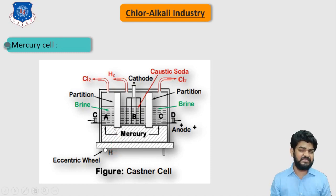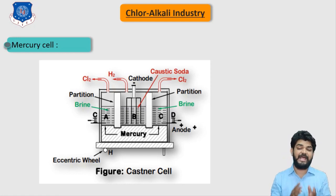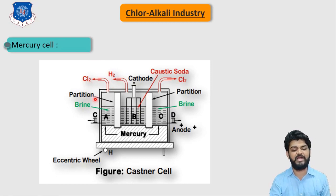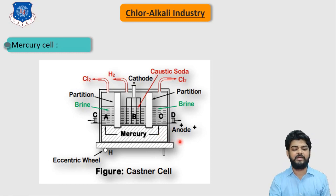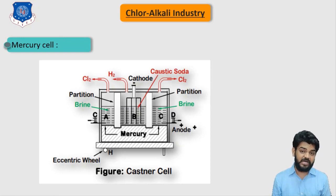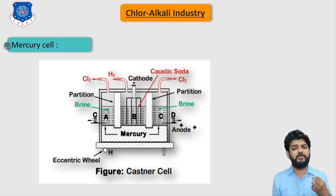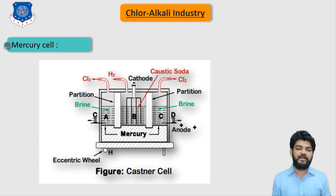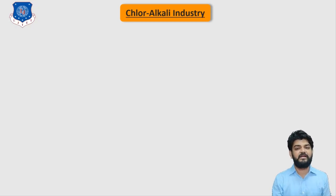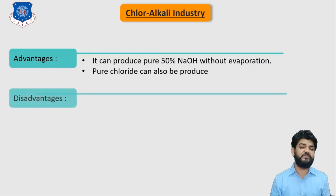As a result, chlorine gas is liberated from the anode side, and hydrogen along with NaOH is obtained on the cathode side. The NaOH solution produced is highly concentrated, so the evaporation operation can be minimized and only a small amount of residual salt needs to be removed from the aqueous solution.